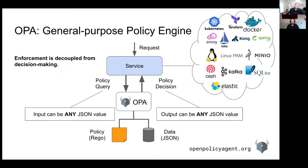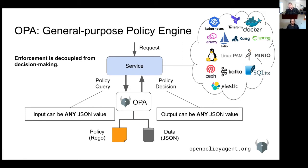So what is OPA? It's a general purpose policy engine. It sounds vague, and the reason is that it's not domain specific — not just for authentication, authorization, or image scanning. It's a policy language, runtime, and tools to evaluate and make decisions. At a high level, you query OPA. Any input can be JSON — if you can JSON serialize it, it can go into OPA's input. The decision can be a Boolean allow yes/no, but it can also be a set of reasons, or a set of mutations like what labels to add to a pod.